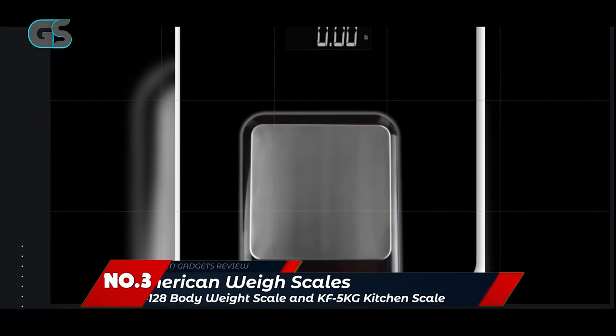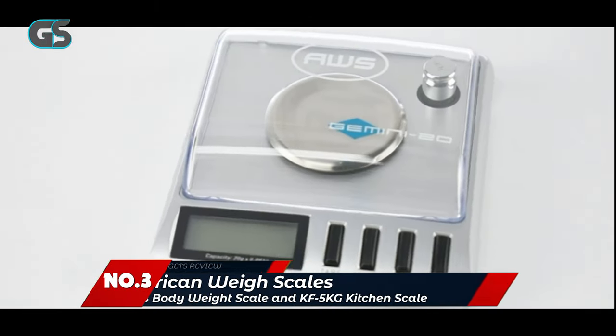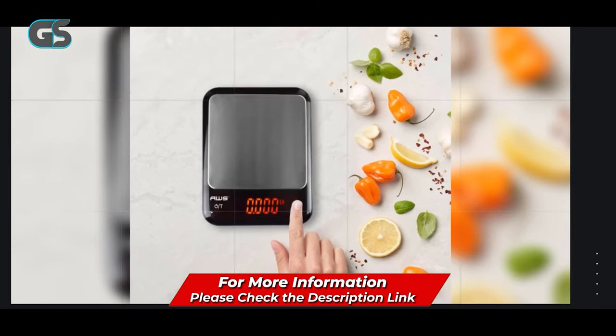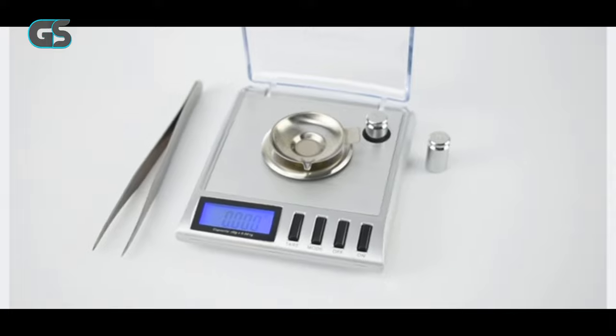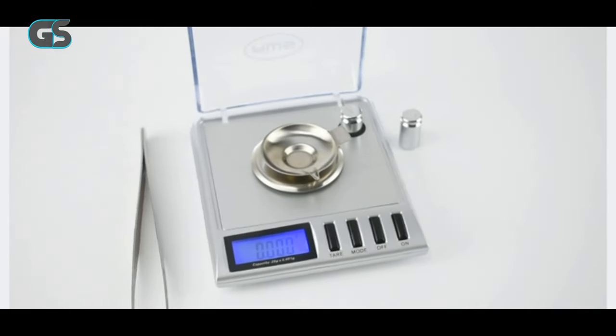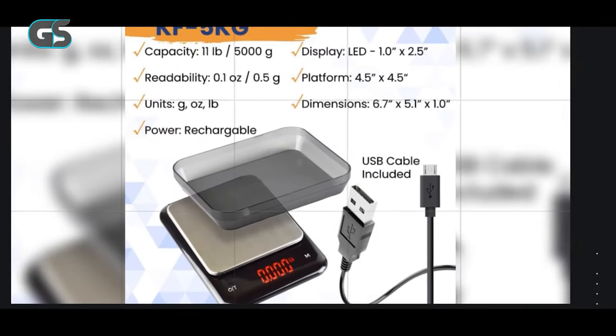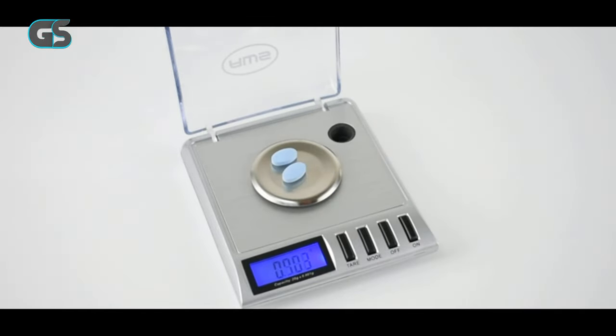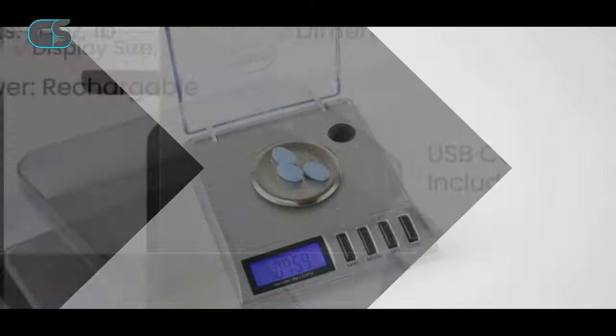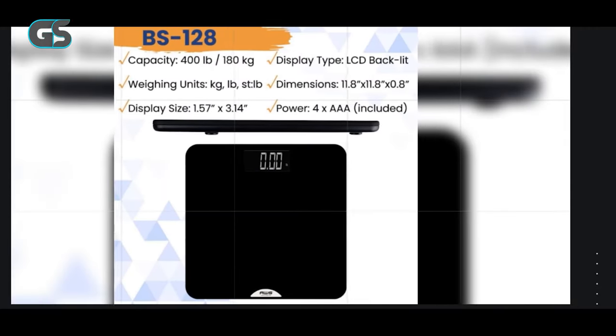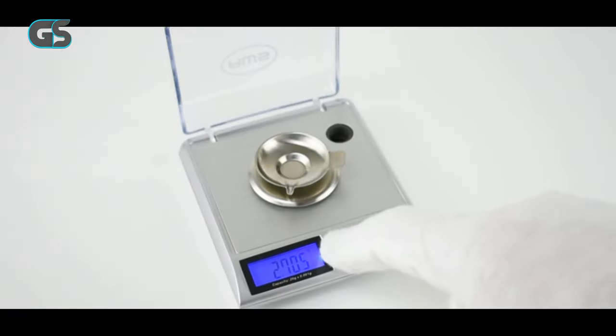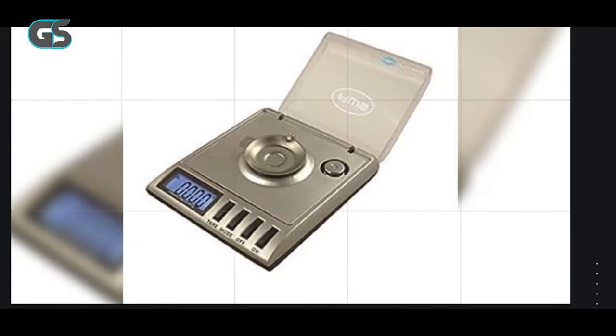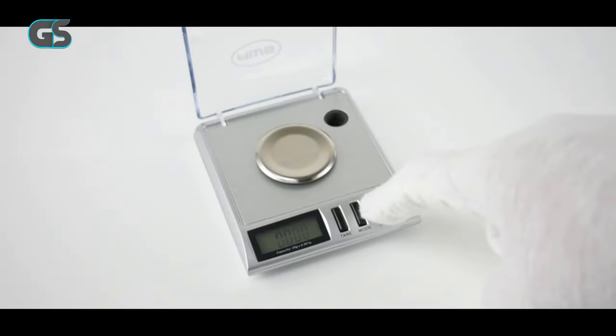Number 3. American Way Scales BS 128 Body Weight Scale and KF 5KG Kitchen Scale. The American Way Scales BS 128 Body Weight Scale and KF 5KG Kitchen Scale Combo have impressed me with their exceptional performance and utility. This dynamic duo caters to your fitness needs and elevates your culinary experience with precision and accuracy. The BS 128 Body Weight Scale boasts a sleek, modern design featuring a large, easy-to-read display. Its measurement accuracy is commendable, consistently delivering precise weight readings, making it an ideal tool for tracking your fitness journey. The step-on activation and auto-off feature further enhance its user-friendliness. Additionally, its sturdy build and reliable performance make it a durable investment.